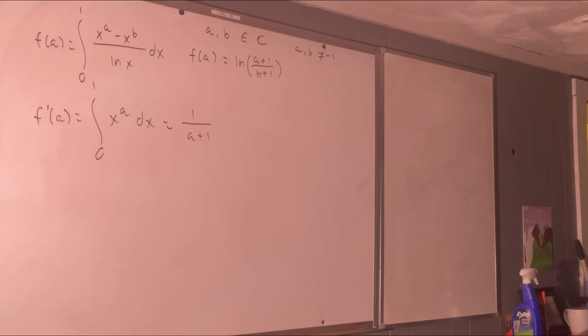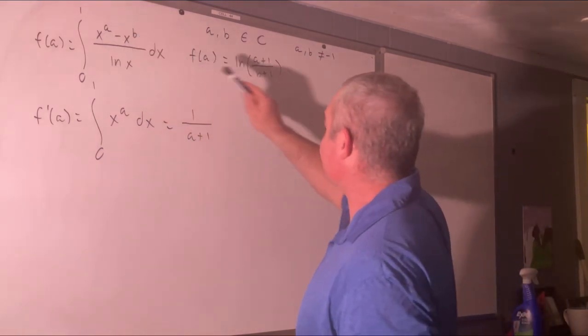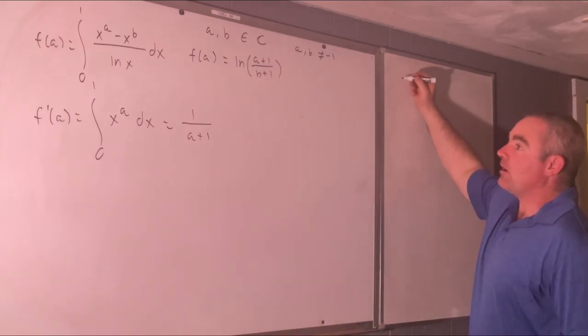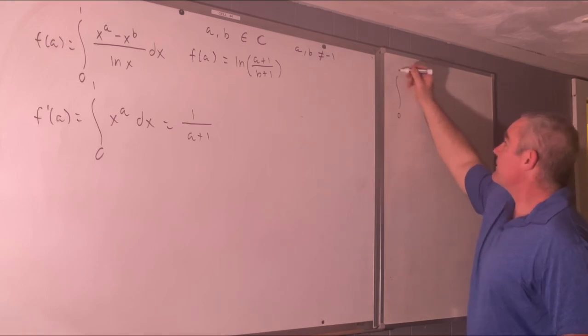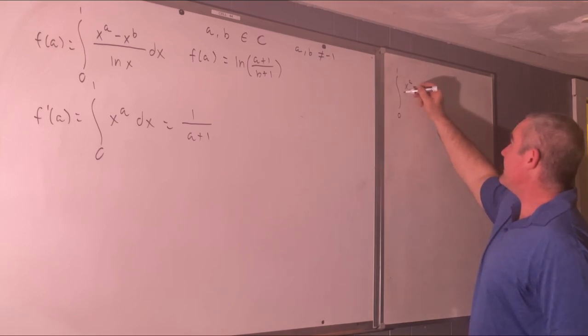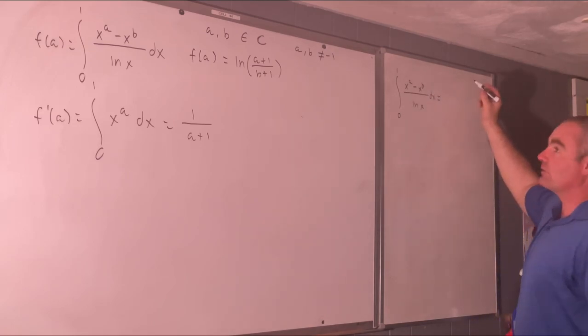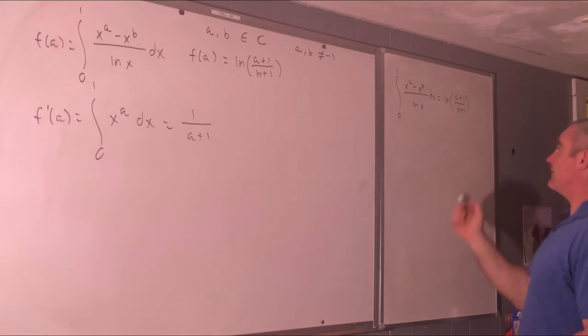Okay, so that's it. That's our formula. This is equal to this and I'll just write that over here. And all is glory. The integral from 0 to 1 of x to the a minus x to the b over natural log x dx is equal to the natural log of a plus 1 over b plus 1 with the obvious restrictions.